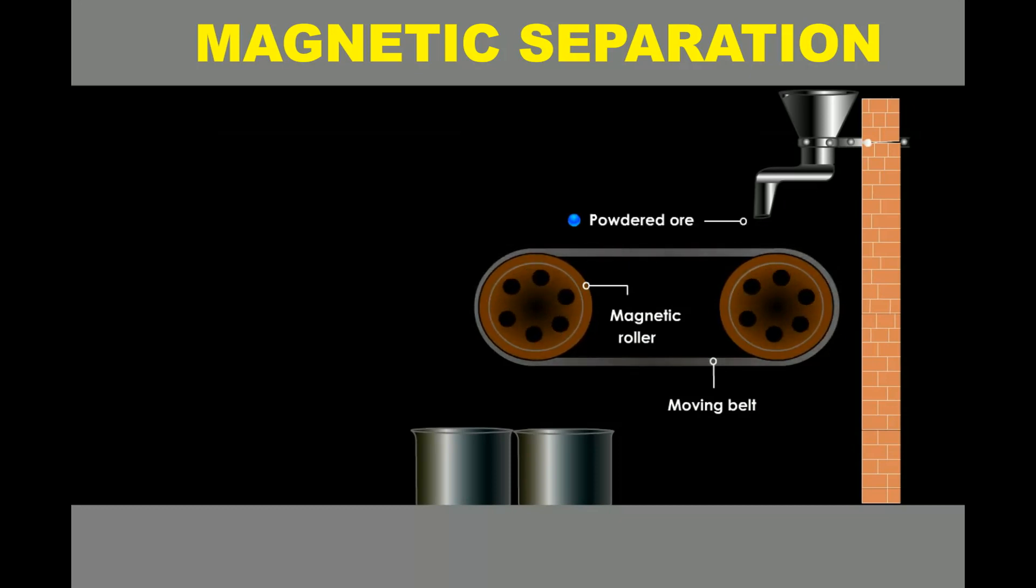The ore is passed over a conveyor belt that runs over two rollers, one of which is magnetic.